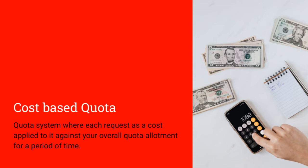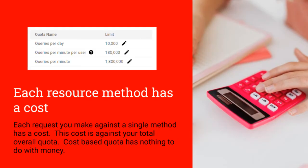So what is a cost-based quota? You'll be happy to hear that cost-based quotas have nothing to do with money. When you create your project on Google Developer Console, you are given a default quota limit. It may be easier for you to think of this quota as points. You were probably given 10,000 quota points when you created your project. Each request that you make against the API is going to cost some of these points. They will be subtracted from your overall allotment for that day.